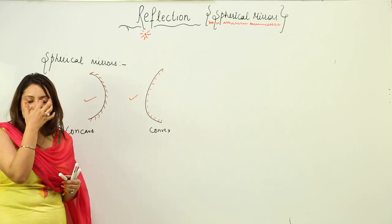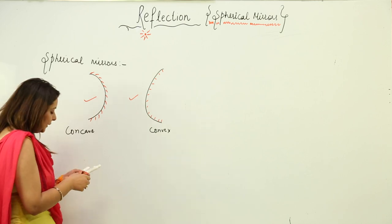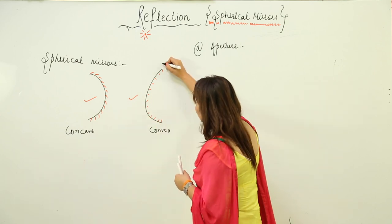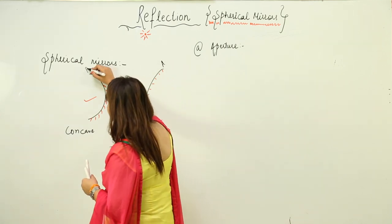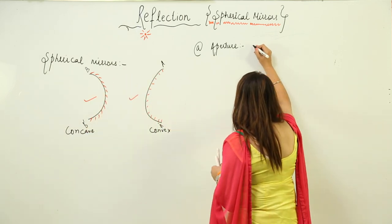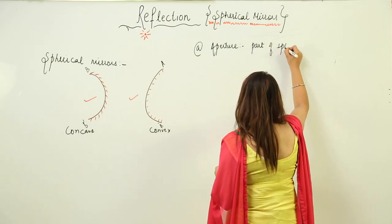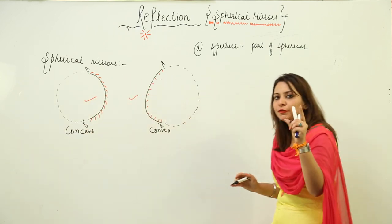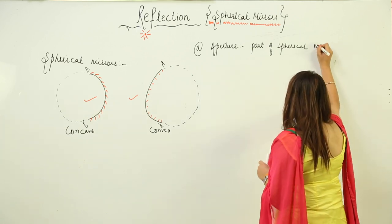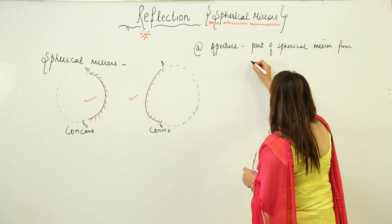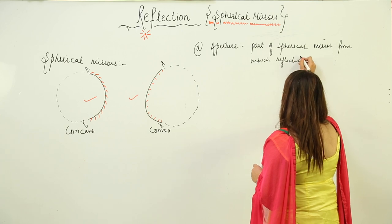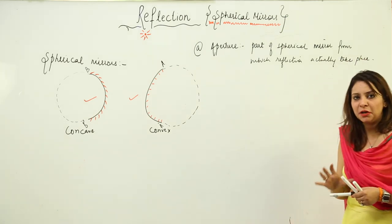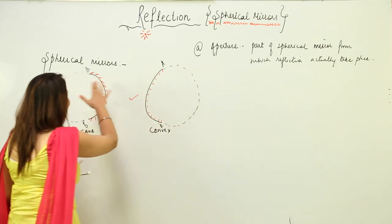Now we are going to start with the basic terminology used in spherical mirrors. The first term is aperture. An aperture, say A and A dash, or B and B dash, is a part of the spherical mirror. If you complete the shape, it becomes a sphere, but reflection doesn't occur from the whole sphere — it occurs from a specific part. That specific part from which reflection actually takes place is called the aperture.